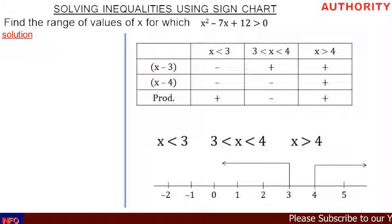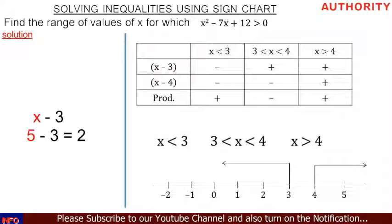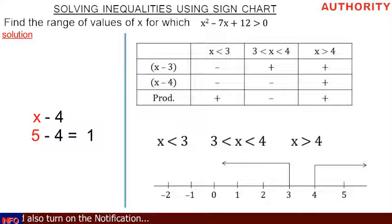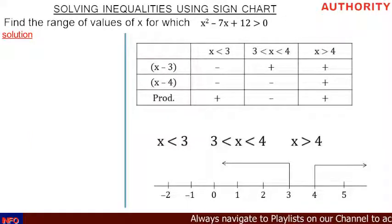For the last range, x greater than 4, let's pick 5. In x minus 3: 5 minus 3 equals 2, so we write positive. In x minus 4: 5 minus 4 equals 1, so we write positive. Under the product, plus times plus gives us plus. We have now completed our table.